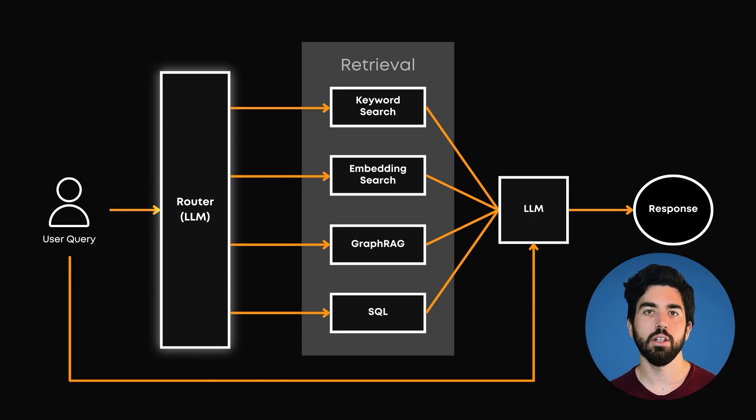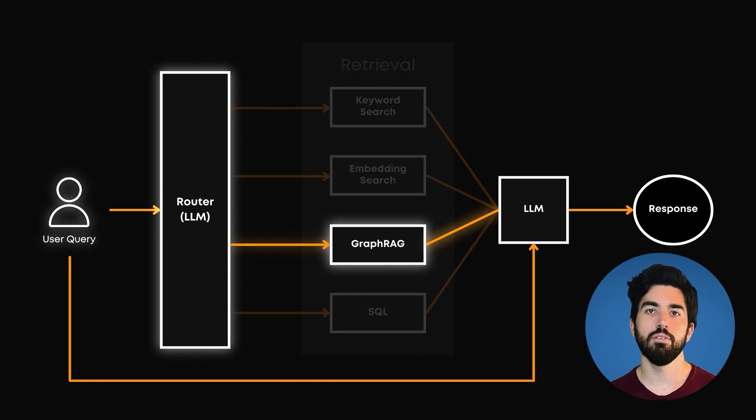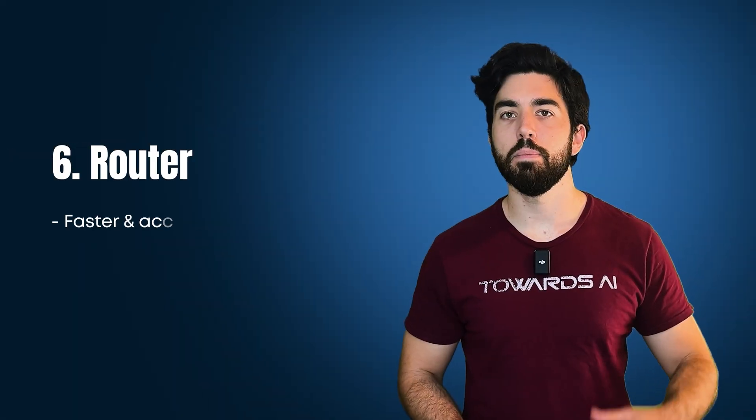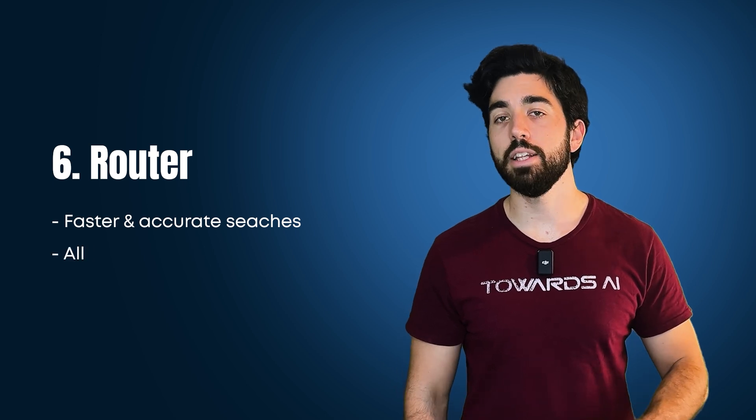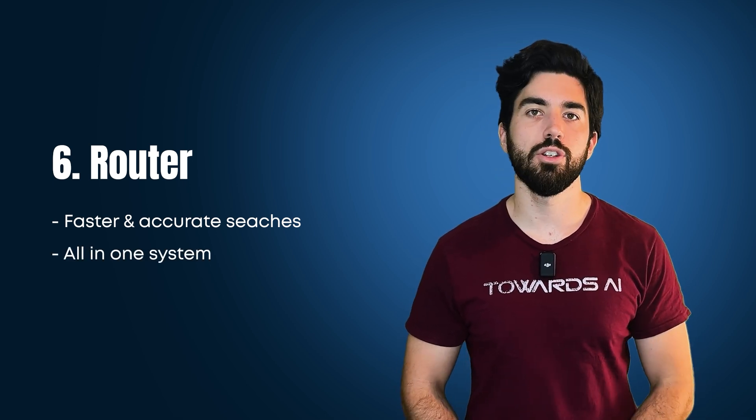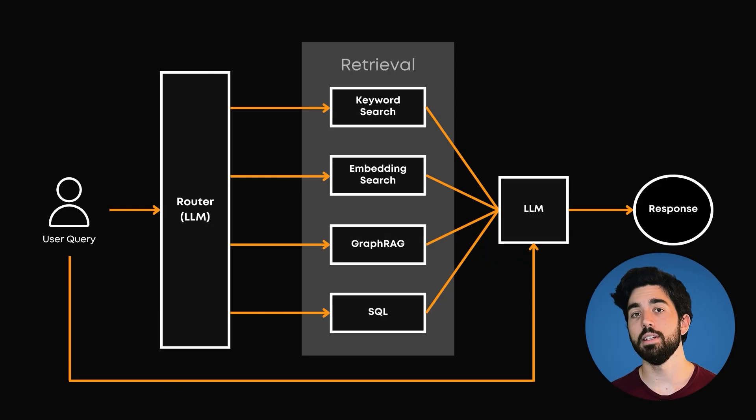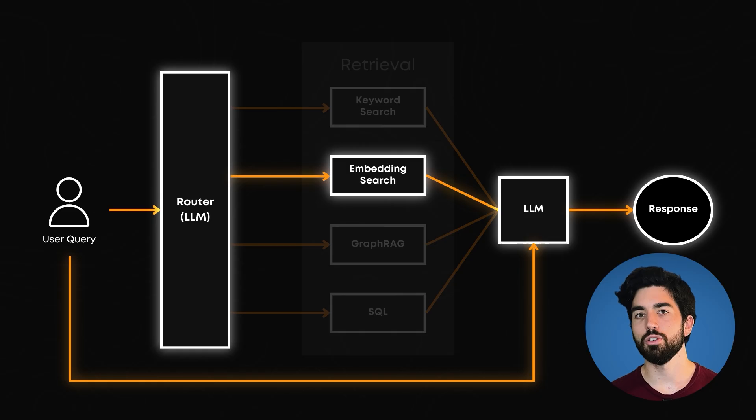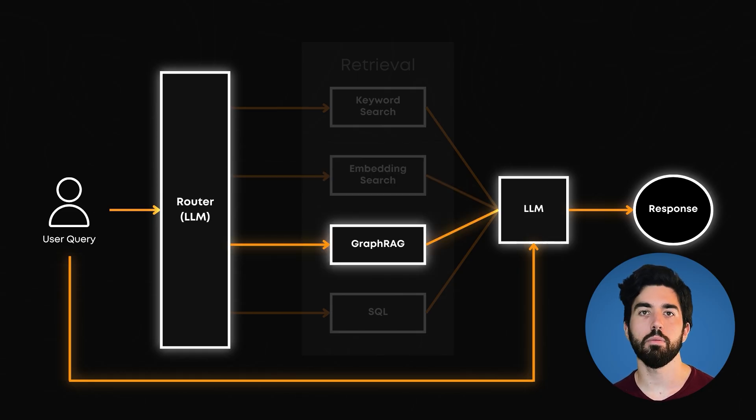It's usually a powerful language model that understands your query and the search options you have and figures out the techniques that would best fit your needs. It would just be like you after watching this video, having a good idea of why one should use keyword search or embedding search or graphs. Routers make your searches faster and more accurate. They can use different techniques for different questions all in one system. For instance, a router in a customer help system might use keyword search for product codes, embedding search for general questions, and GraphRAG for complex problem solving.